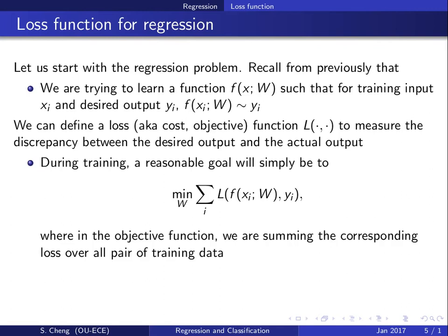Let's look at the regression problem again. For a regression problem we have an input x and an output y. In supervised learning we have training data — pairs of training inputs and training outputs — so we know the expected output. For regression, the output y_i belongs to some continuous domain, basically some real number.